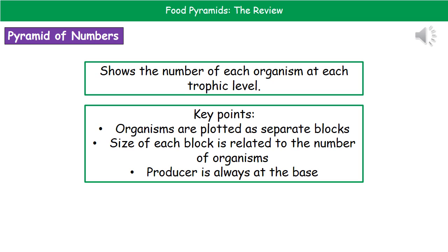A few key points to remember here. First, organisms are plotted as separate blocks. Second, the size of the block is related to the number of organisms present. And third, the producer is always at the base.